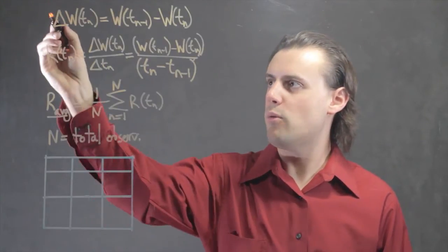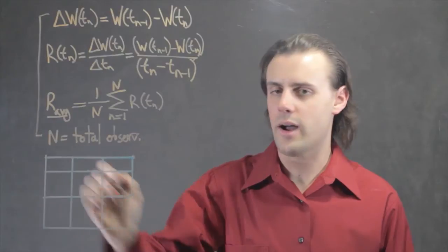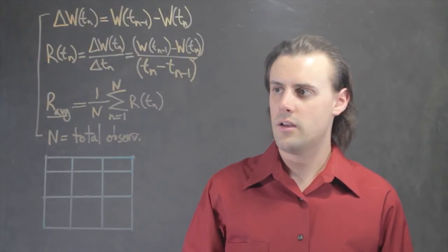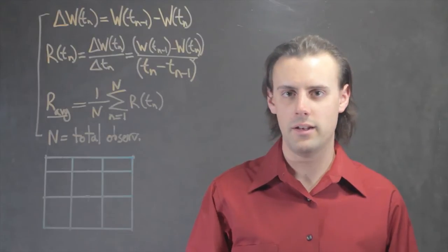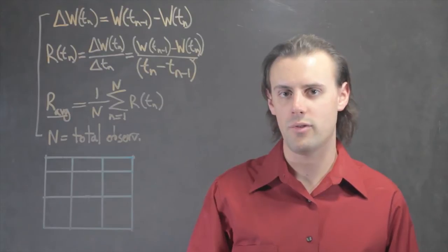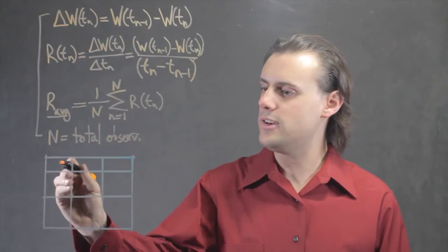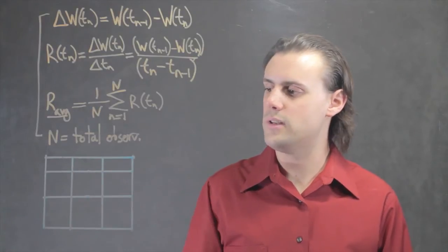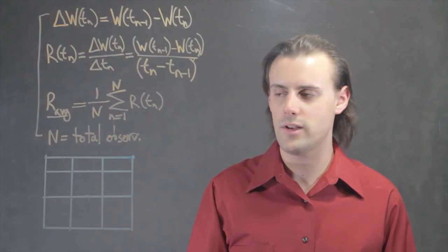These equations and their application to the data collected in an experiment would normally be placed in the appendix section of the lab report, in which one would tabulate the data. Here I have a table, and the first row will be devoted to the different observation times.